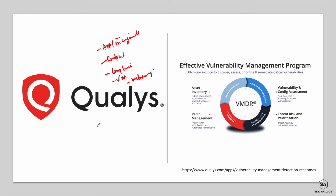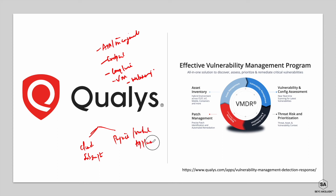Qualys officially offers vulnerability management services in two ways: cloud subscription and physical or virtual appliances. For the cloud subscription, you subscribe to the Qualys cloud platform and choose the solution you need. For vulnerability management, we're looking at VMDR — Vulnerability Management, Detection and Response.